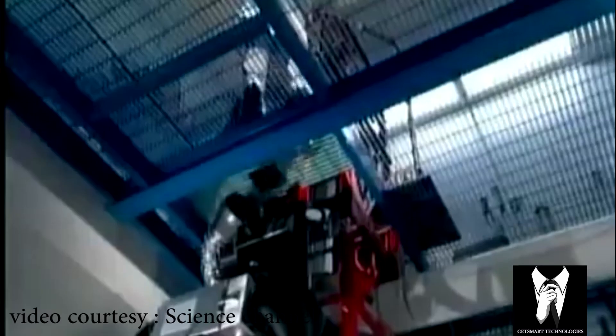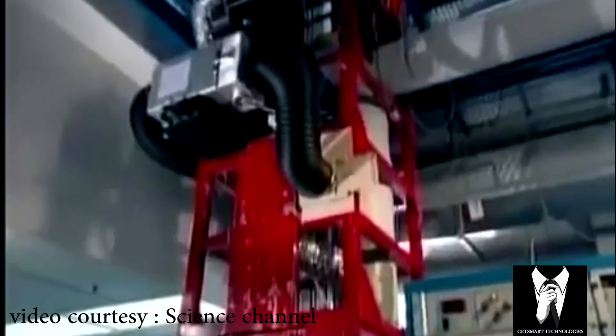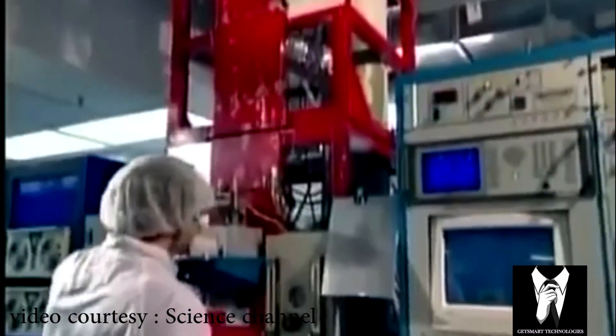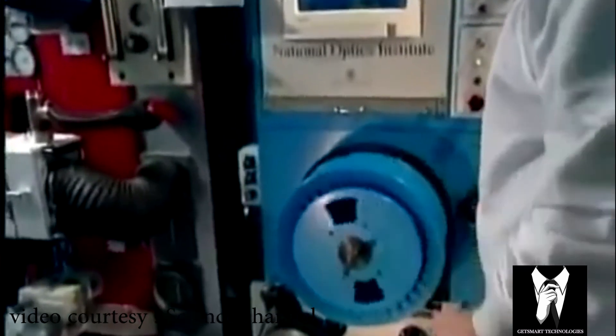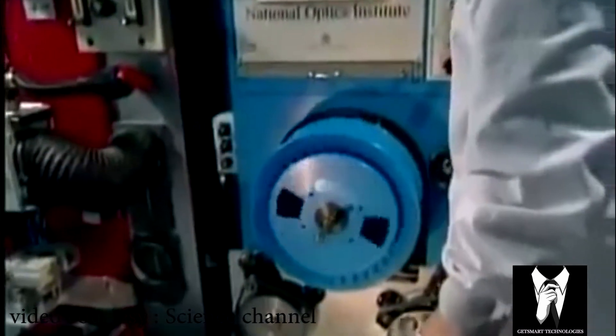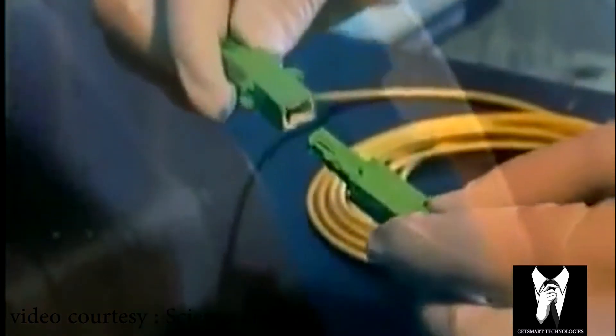From here it's either shipped out as is or put into a cable. Fiber optic cables are expensive to produce, but they are smaller and lighter than traditional copper cables. They carry more information and need fewer repeaters to keep the signal from deteriorating. And unlike copper wires, they're immune to electromagnetic interference.